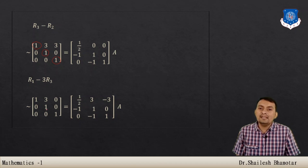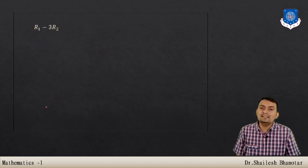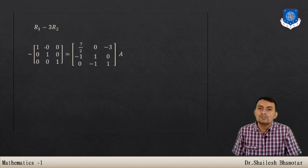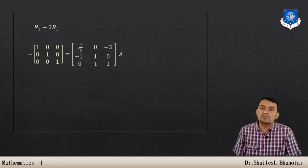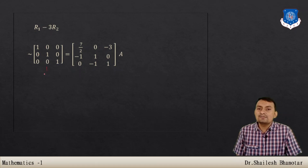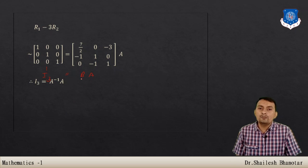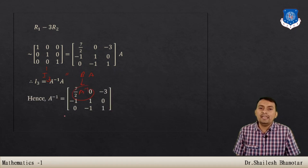Now eliminate above the leading entries: multiply row 3 by −3 and add to row 1, and multiply row 2 by −3 and add to row 1. After all operations, the left side becomes the identity matrix I₃, and the right side becomes matrix B = A⁻¹.